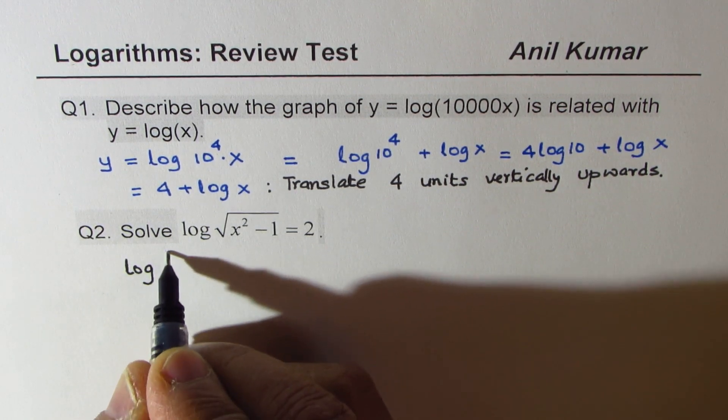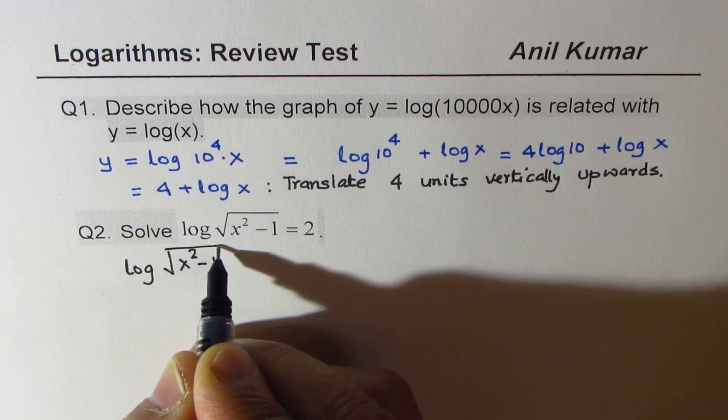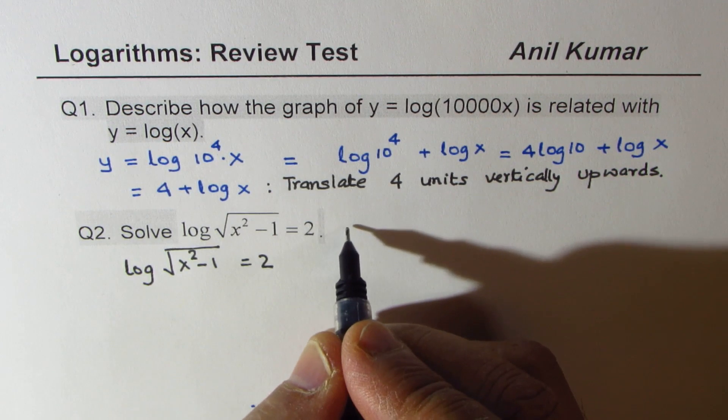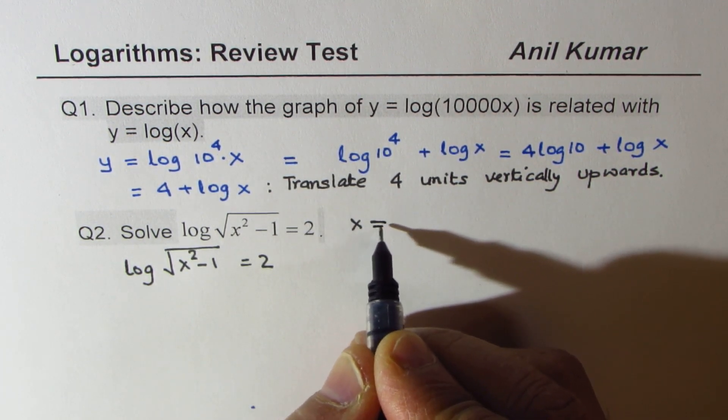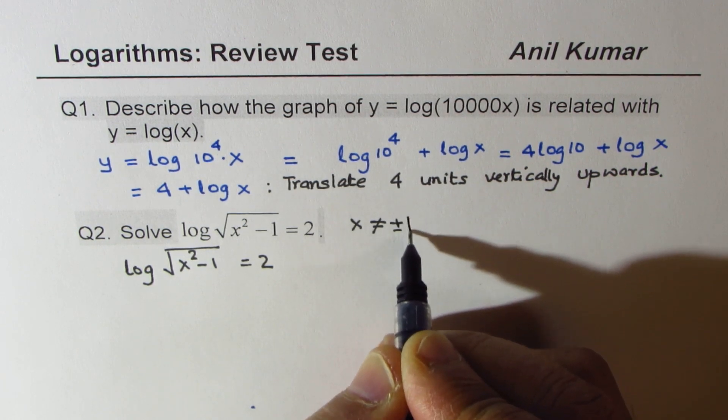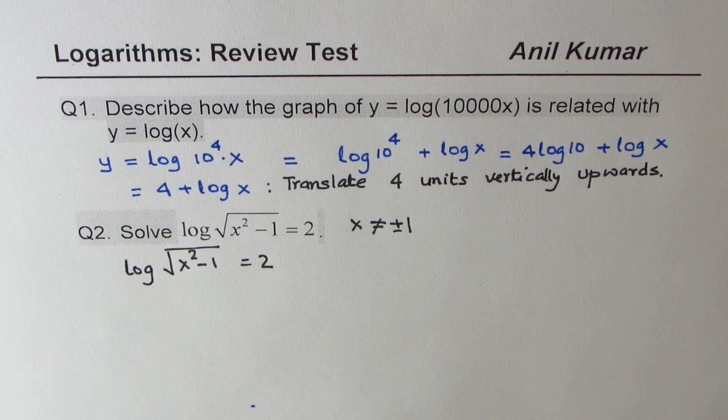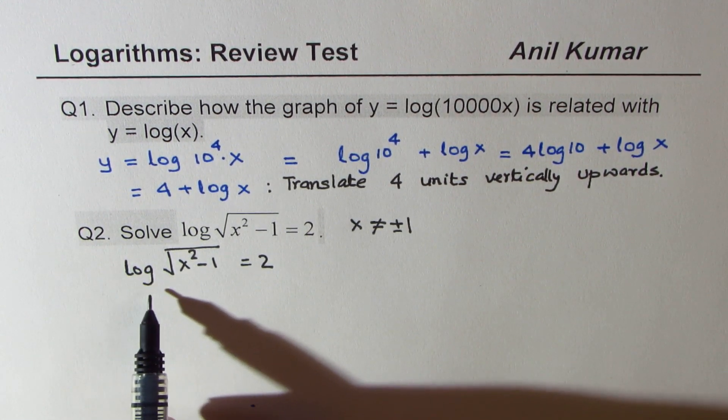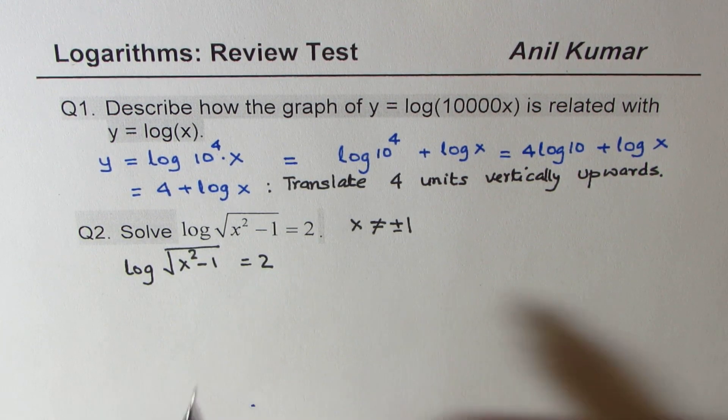Question number 2: Solve log square root of x squared minus 1 equals 2. Let me rewrite this. Now in this case, we know there is only one restriction: x is not equal to plus or minus 1. That will make this zero, but all other values are valid. So we get the equation log to the base 10 of square root of x squared minus 1 equals 2.